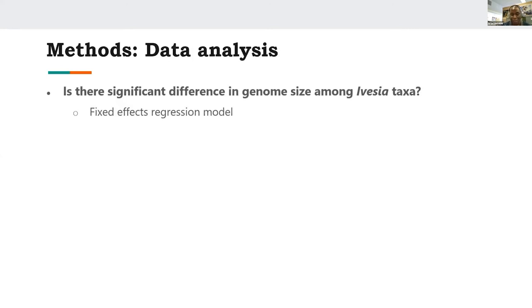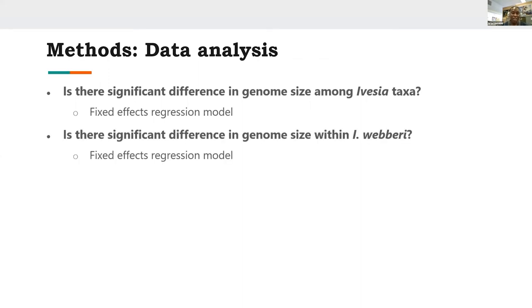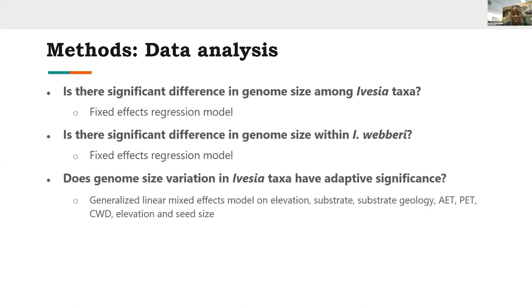Once we obtained the genome size data across all the taxa, we performed statistical analyses to determine whether there was any significant difference in genome size among Ivesia taxa and within Ivesia weberi populations. We also obtained GIS layers of elevation, substrate geology, different substrate types, cumulative actual evapotranspiration, potential evapotranspiration, and seed size data to find out whether there was any strong correlation between genome size variation and these environmental and functional variables.